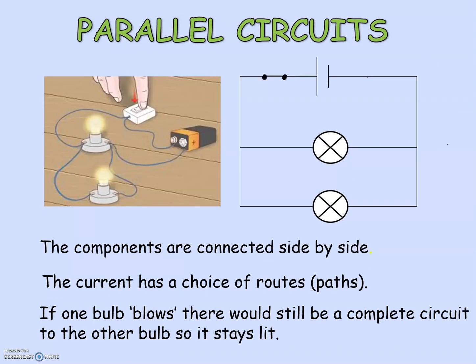On the other hand, if you look at a parallel circuit, the components are connected side by side and the current has an alternative path. So say this is bulb A and that's bulb B — if bulb A was to stop working, bulb B will still work. The reason is that in this circuit the current has two ways to flow, so it has a two-way system. If the first circuit stops working, the second circuit will continue to work.